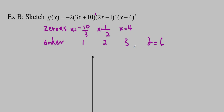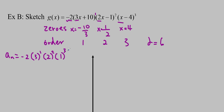Now find the leading coefficient. It's going to be negative 2 times 3 to the 1, times 2 squared, times 1 to the 3. Make sure you keep those exponents — you might forget and it will make the answer very wrong. This ends up being negative 24, and the important part is that it is negative. You can write 'even' beside it since the degree 6 is even.